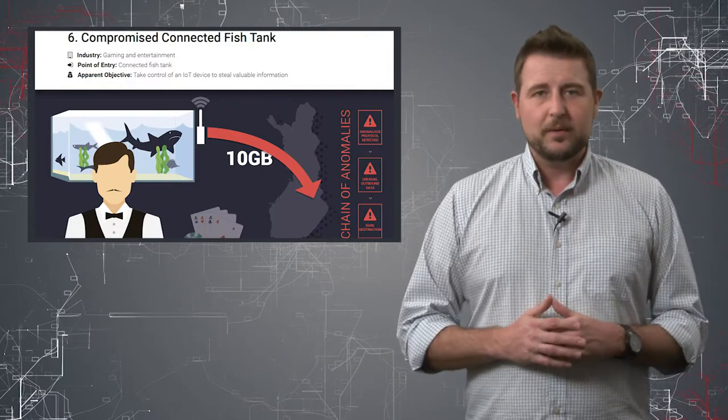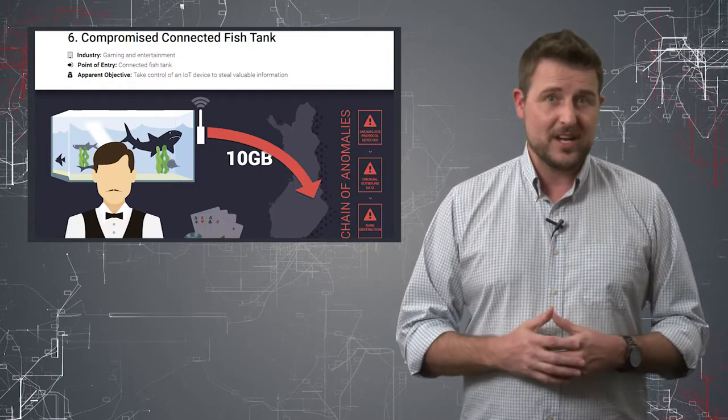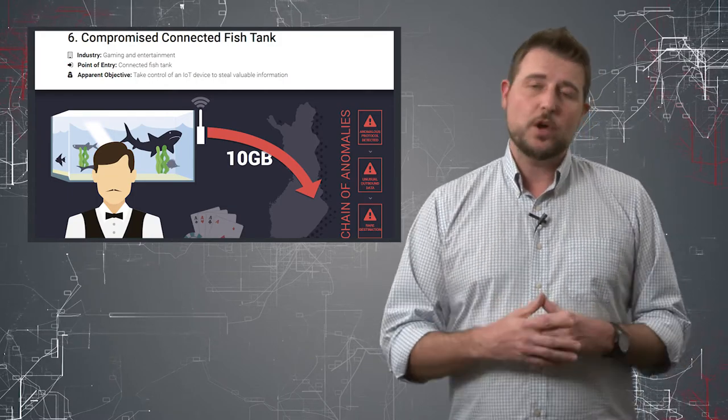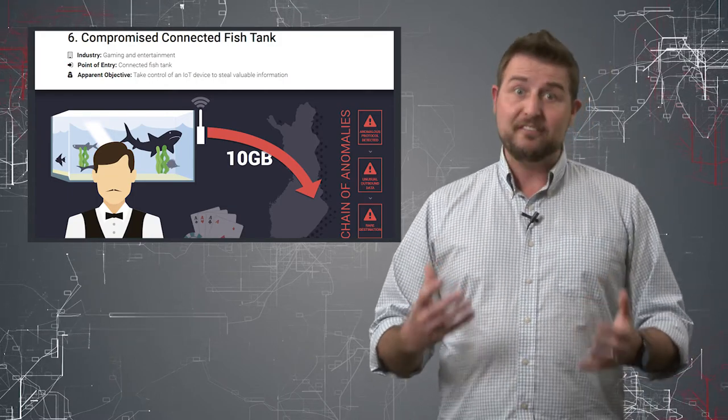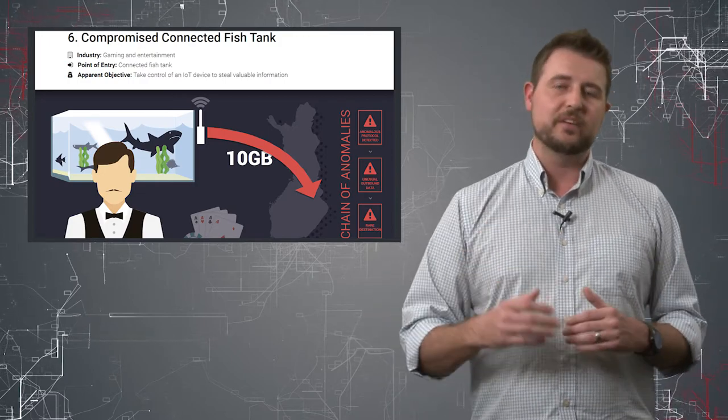So this story is a perfect example of how even consumer IoT, something as benign as a fish tank, could become a bastion host on your network that attackers would use and have value simply because it's within your internal perimeter and they can pivot to it.